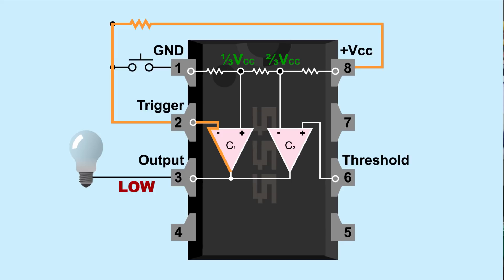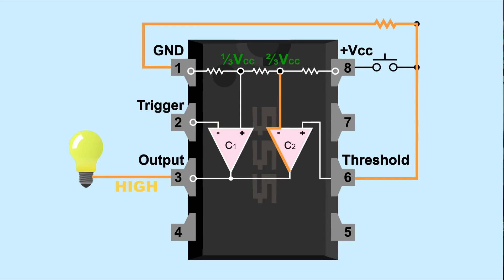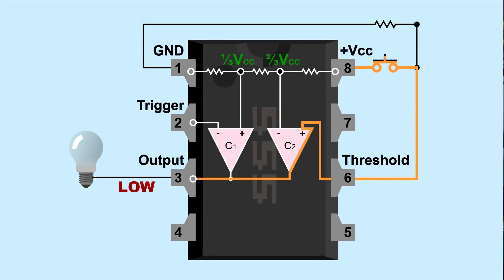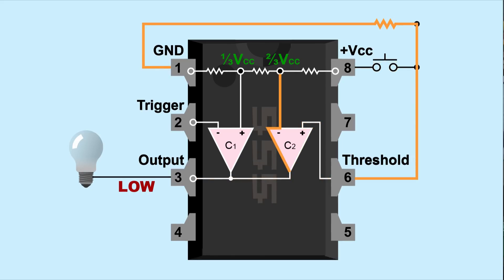The 555 output starts low. When the button connected to trigger is pressed, the 555 output is switched to high. When that button is released, the 555 output doesn't change. This is the first stable output state, high. When the button connected to threshold is pressed, the 555 output is switched to low. When that button is released, the 555 output doesn't change. This is the second stable output state, low.